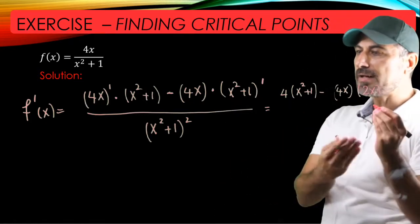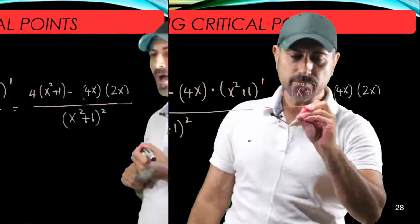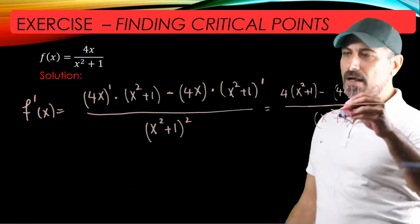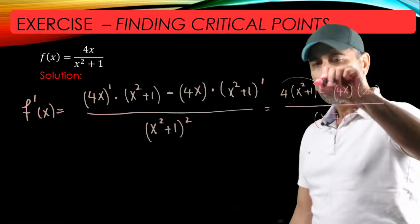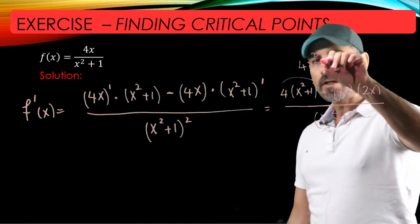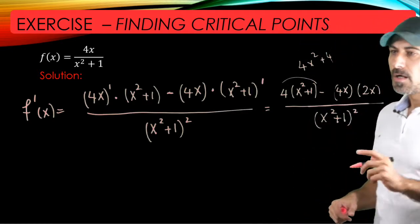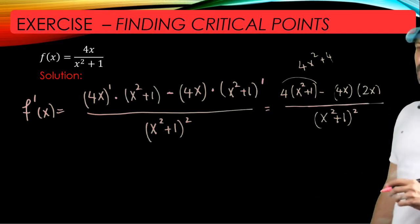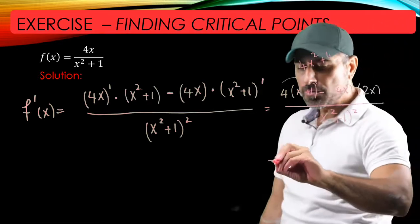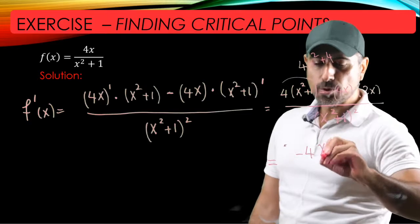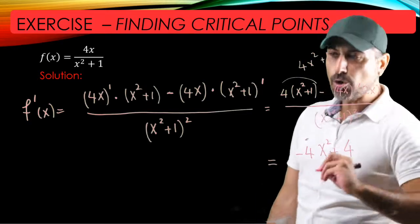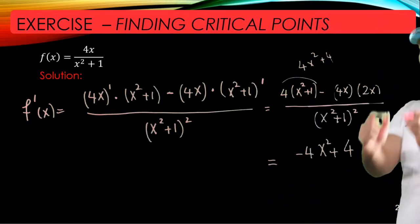And this is all divided by the bottom squared. Alright, if we expand out the top you have 4x squared plus 4 minus 8x squared. So if we simplify that you have minus 4x squared plus 4 divided by the bottom squared.